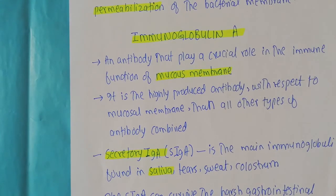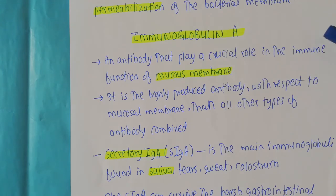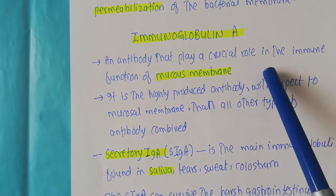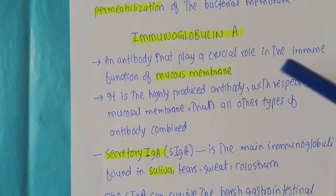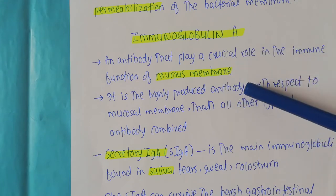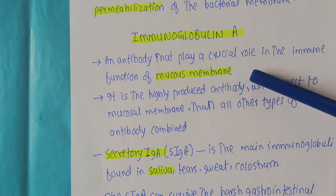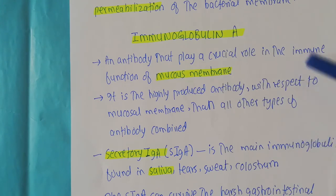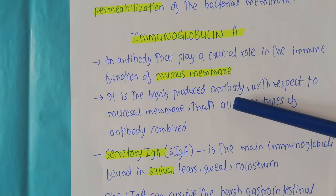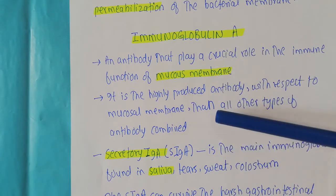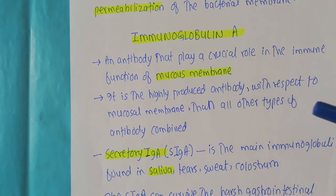Besides these enzymes, there are also antibodies present in the saliva and other body secretions. The important antibody present in the saliva is immunoglobulin A. Immunoglobulin A plays a crucial role in immune functions at the mucous membranes. It is the most highly produced antibody at the mucosal membrane compared to all other types of antibodies combined.